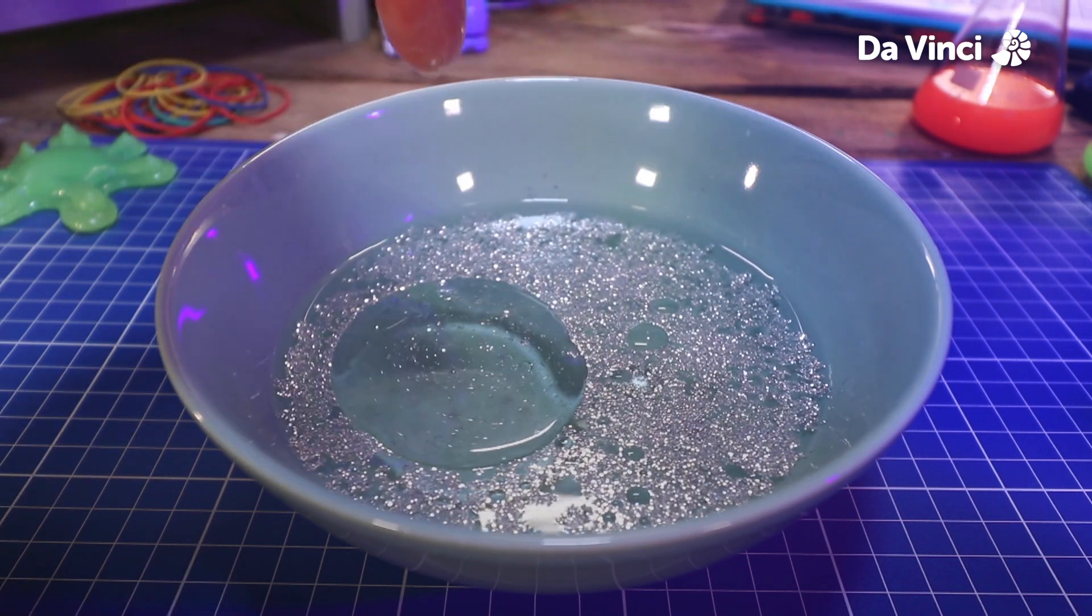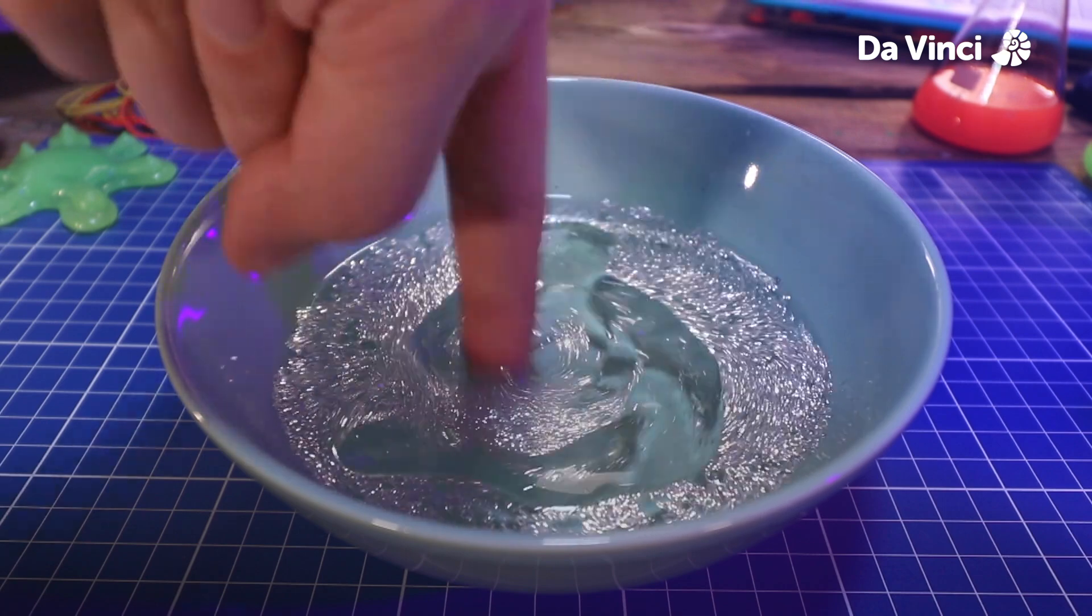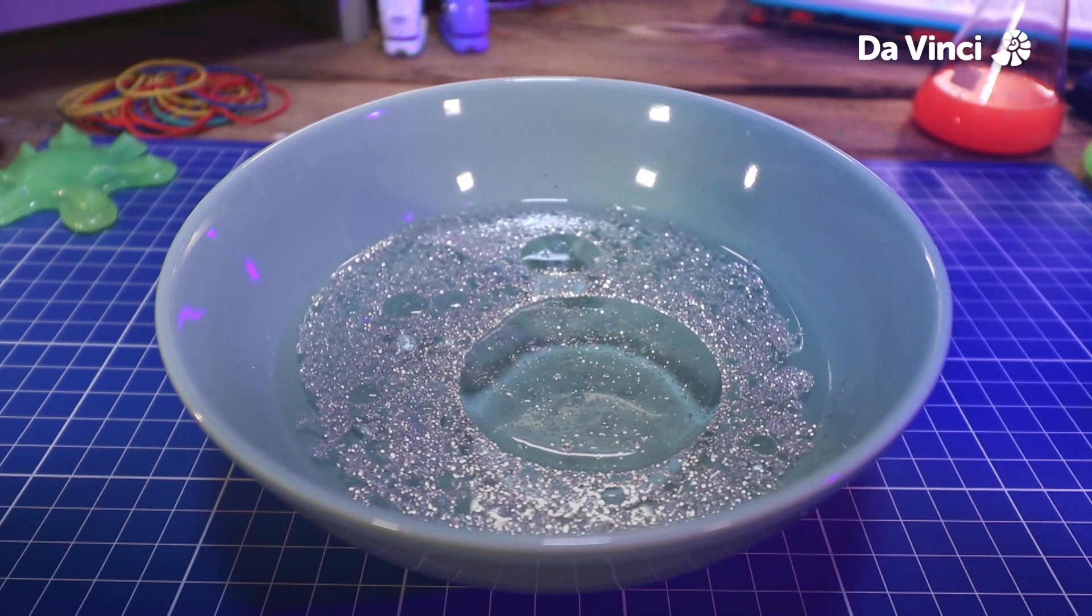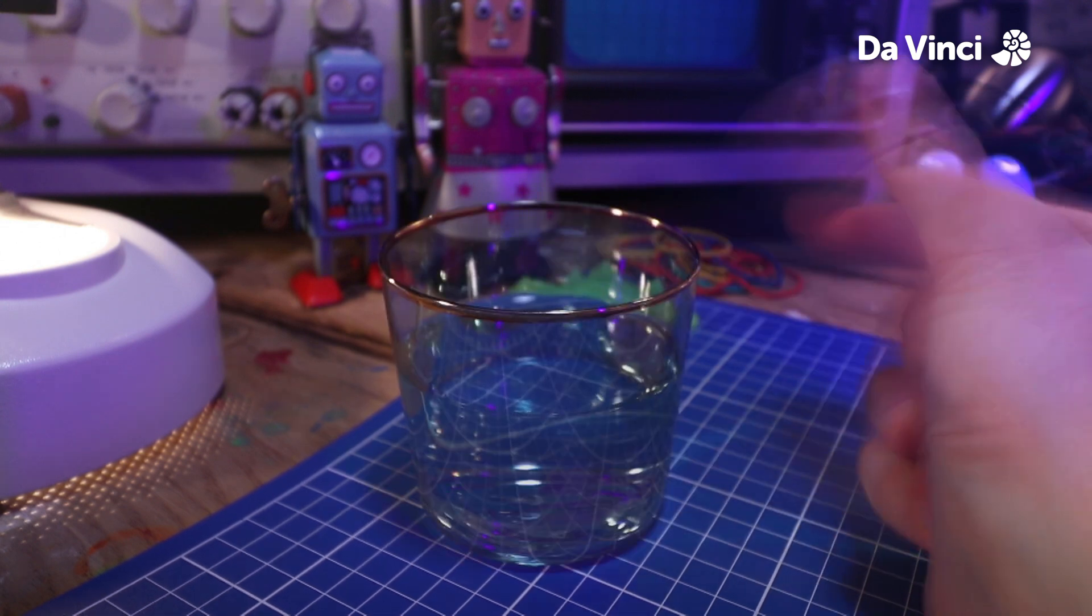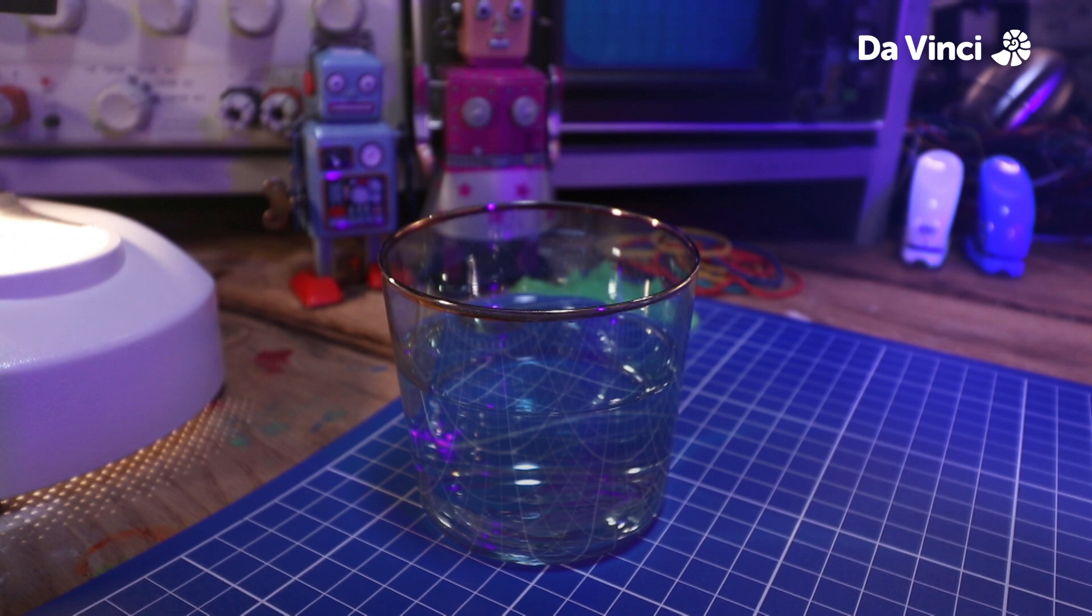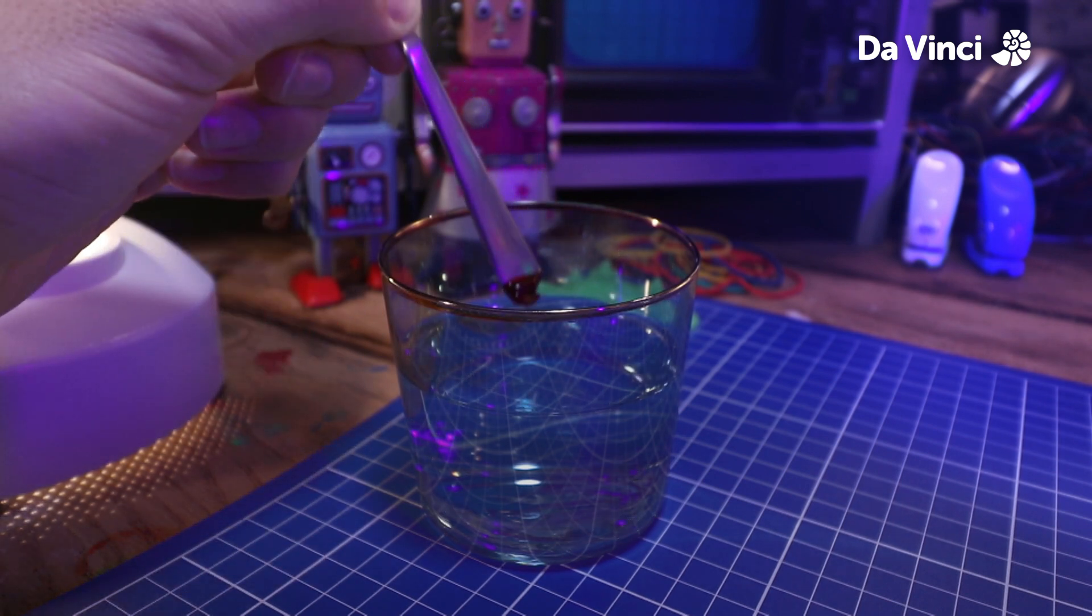No matter how hard you try, the oil and the water just won't mix. This is also very important for our lava lamp. Next, I'm going to grab a glass of water and add in a very small amount of food coloring. You really don't need much to make the water the color you'd like.